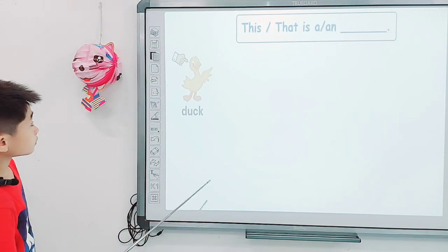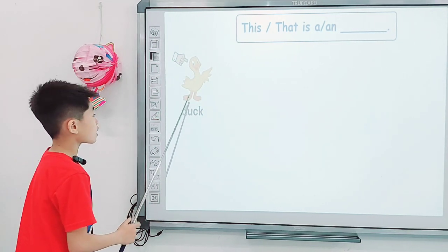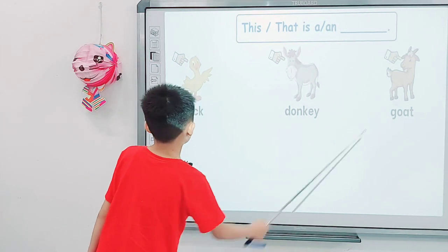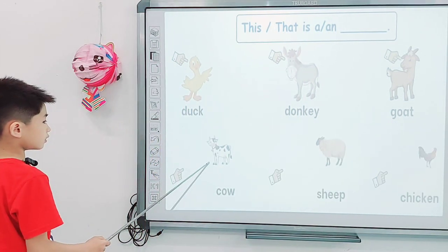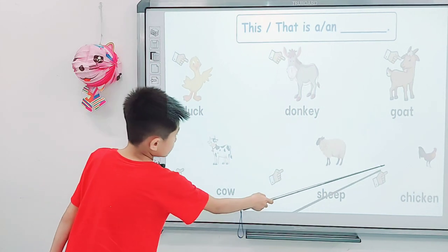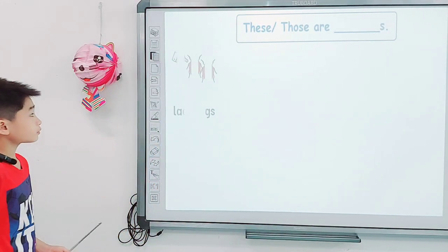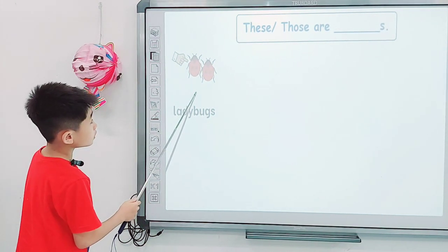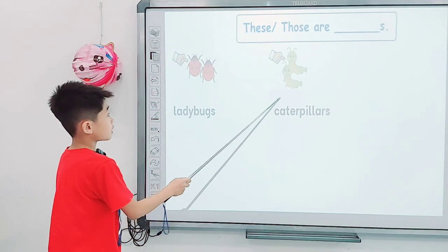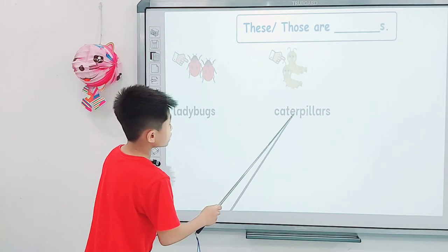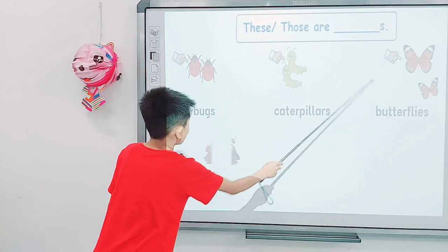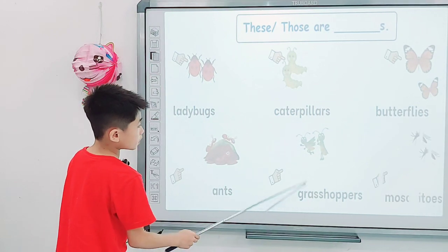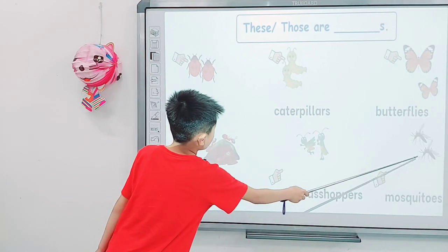The next one, tell me, this is a duck, this is a donkey, this is a goat, that is a cow, that is a sheep, that is a chicken. And these are? They are ladybugs, they are caterpillars, they are butterflies, those are ants, those are grasshoppers, those are caterpillars.